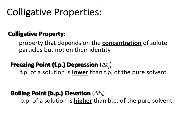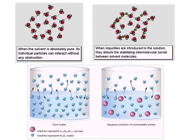Freezing point depression and boiling point elevation are both colligative properties. When you have a solvent that's absolutely pure, you're going to have attractive forces between the particles as you start to cool down the temperature. Those attractive forces grow stronger, the molecules orient, and eventually you freeze. However, when you introduce impurities such as a solute into that solvent mixture, the solute particles get in the way of those interactions. The solvent molecules have a harder time orienting and stabilizing to form the frozen solid. The solute particles act as an interrupter to those attractive forces and subsequently require additional cooling in order for the solid to actually form.